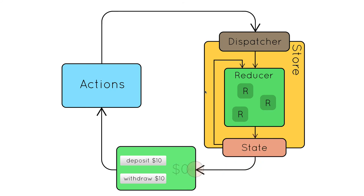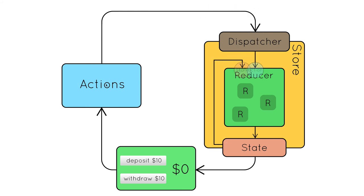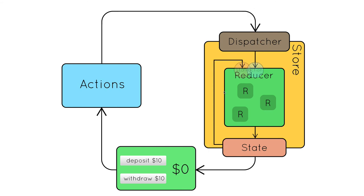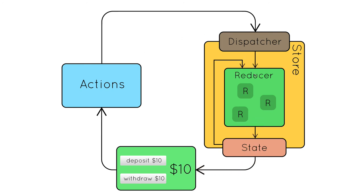That new state will be available for React components to consume. In this example, a React component at the bottom has deposit and withdraw interactions. From the UI, we are sending an action. Till now we were doing store.dispatch, but with React and Redux, the action will be dispatched from your React component — when you click a button, mouse over, load a component, search something, or make any interactions. The action is sent to the store, which has reducers. Reducers check what needs to be done for this synchronous action — Redux is purely synchronous — for example, 10 dollars credited or 10 dollars debited.